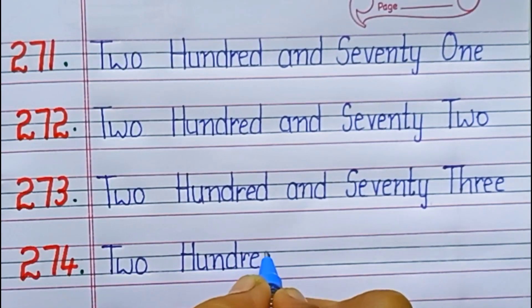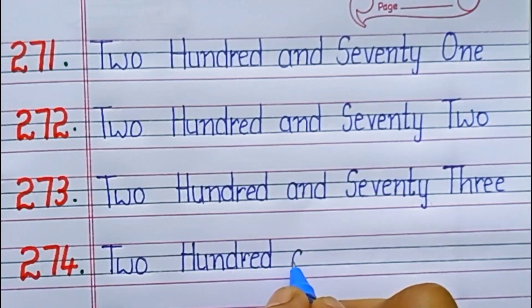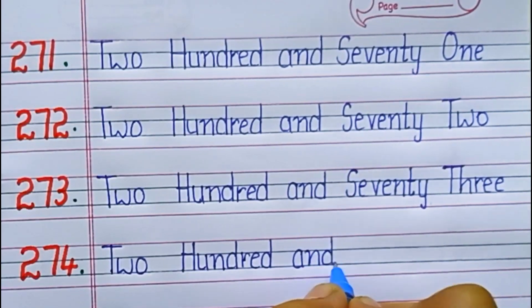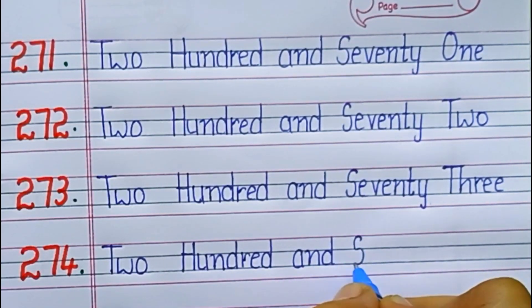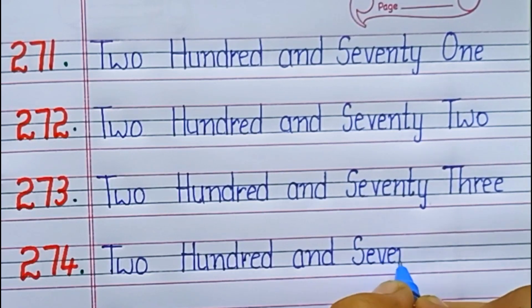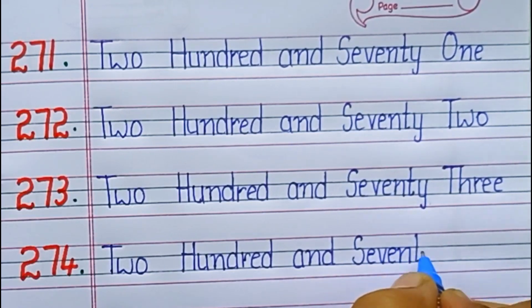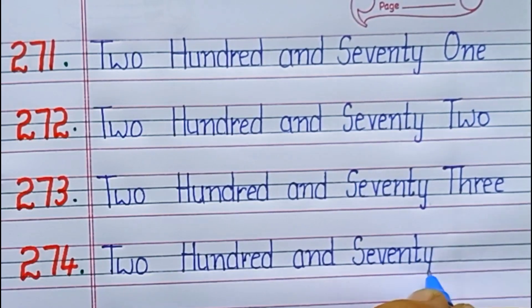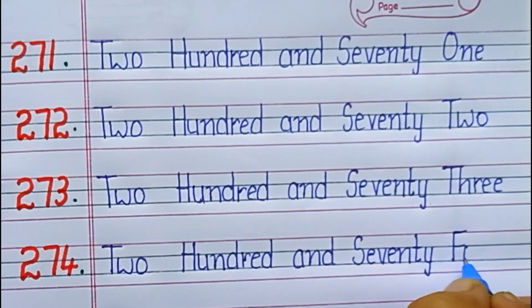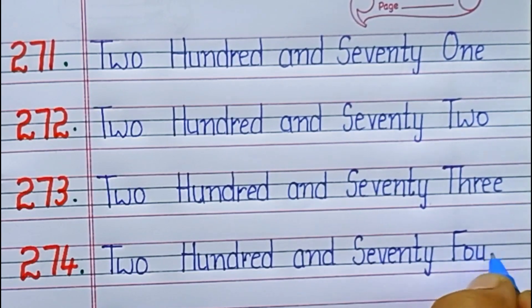274. S-E-V-E-N-T-Y, 70. F-O-U-R, 4. 74. Two hundred seventy-four.